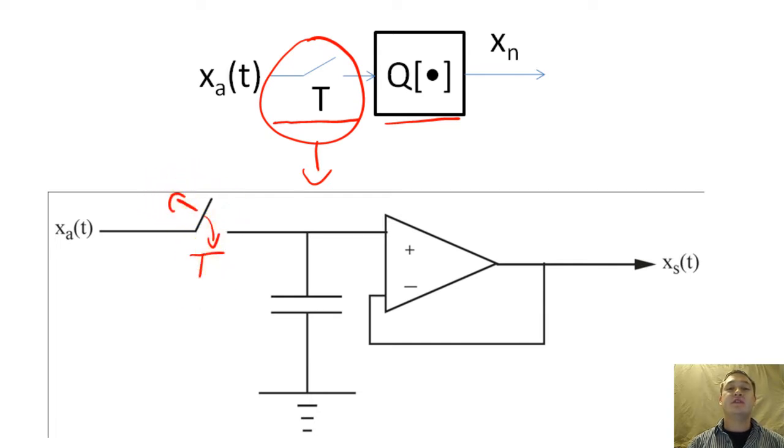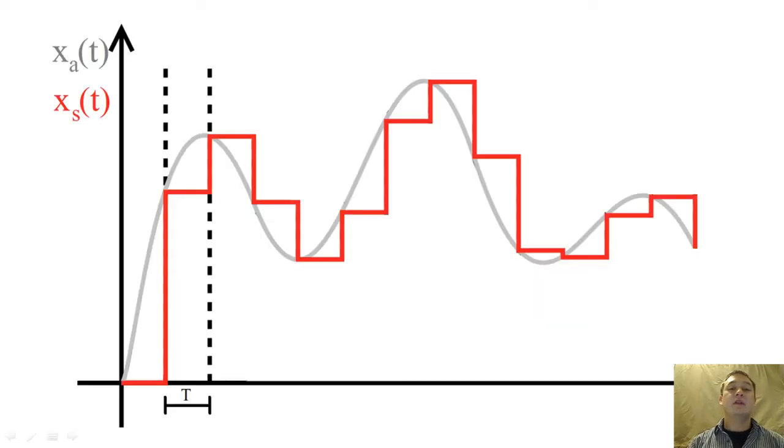When the transistor transmits the signal's voltage at time T, the op-amp and capacitor will be a voltage follower that holds the output voltage at a constant value until the switch triggers another sample. This circuit is called a sample and hold and produces x of s when given x of a.